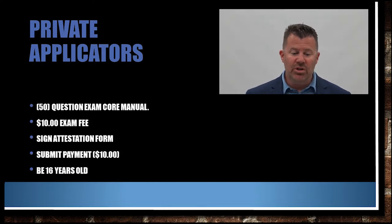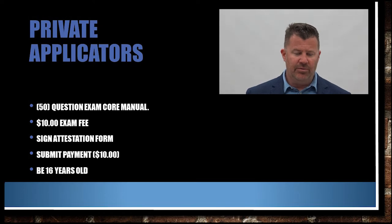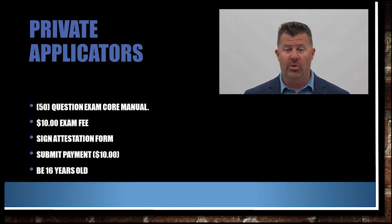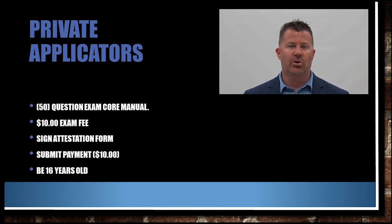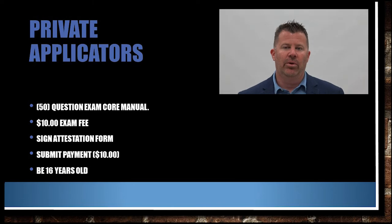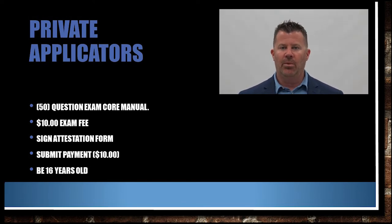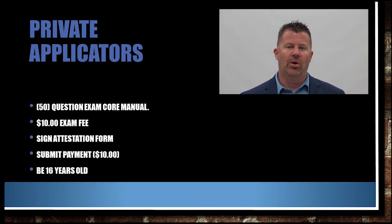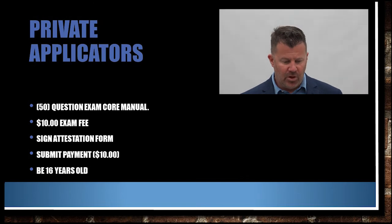Private applicators take a 50-question multiple choice core test that costs $10. You'll have to sign an attestation form stating that you do produce an agricultural commodity — whether you're a strawberry farmer, Christmas tree grower, or whatever agricultural commodity you're growing. You must be at least 16 years old. The reason you can get your private certification at 16 is because many farmers use their children or their children's friends on the farm.